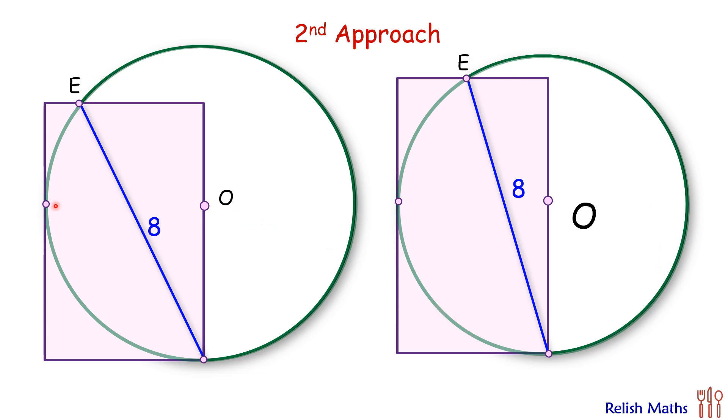Now we have maintained all the conditions here. These points are still tangent, and it's passing through the center, and the length of this blue chord is still 8 cm. So whatever is the answer for this rectangle should be the answer for this rectangle also, otherwise the question will become invalid.